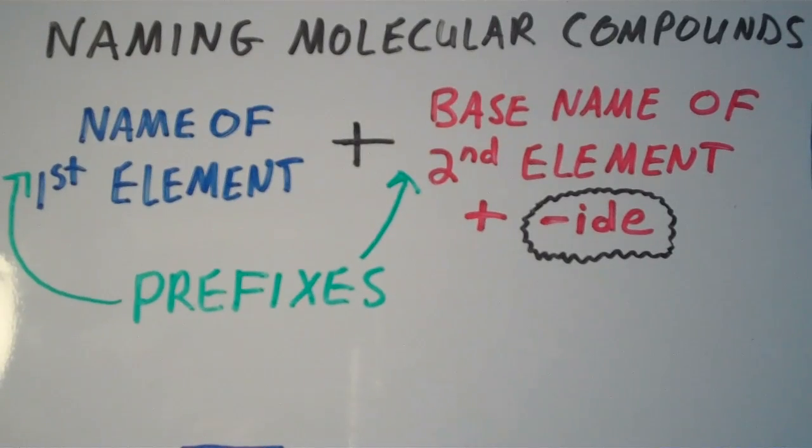All right, so now we're going to go over naming molecular compounds. In this video we're just going to name simple molecular compounds that are only composed of two elements. There are other naming systems for organic molecules and large carbon chains, but we're not going to get into that. We're just going to go into simple molecular compounds in which we only have two elements.